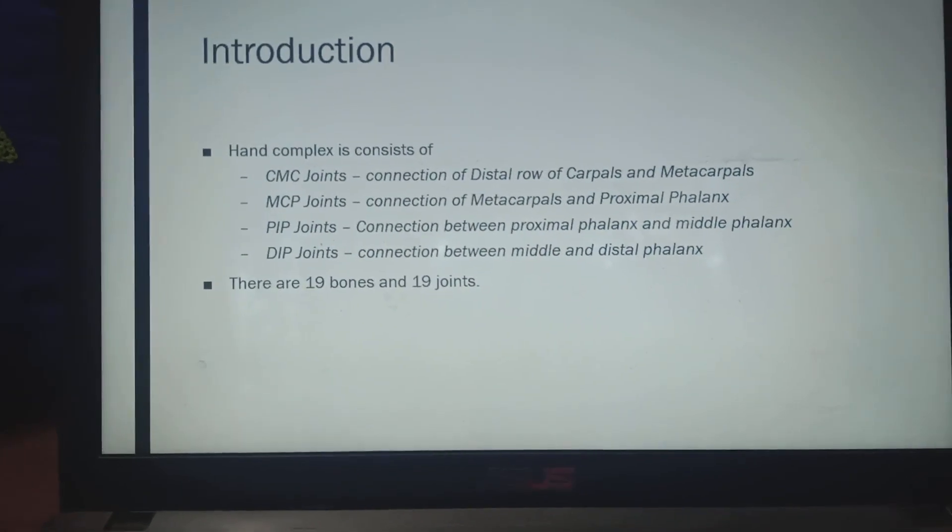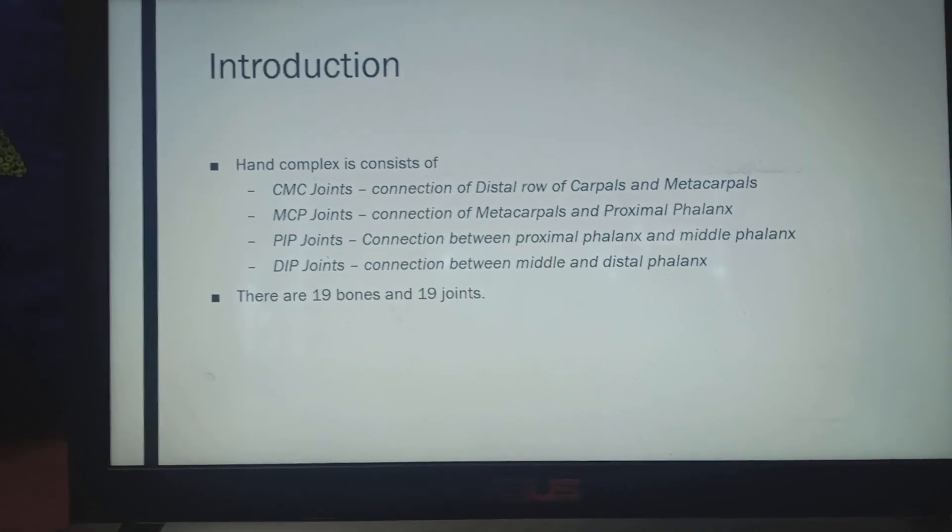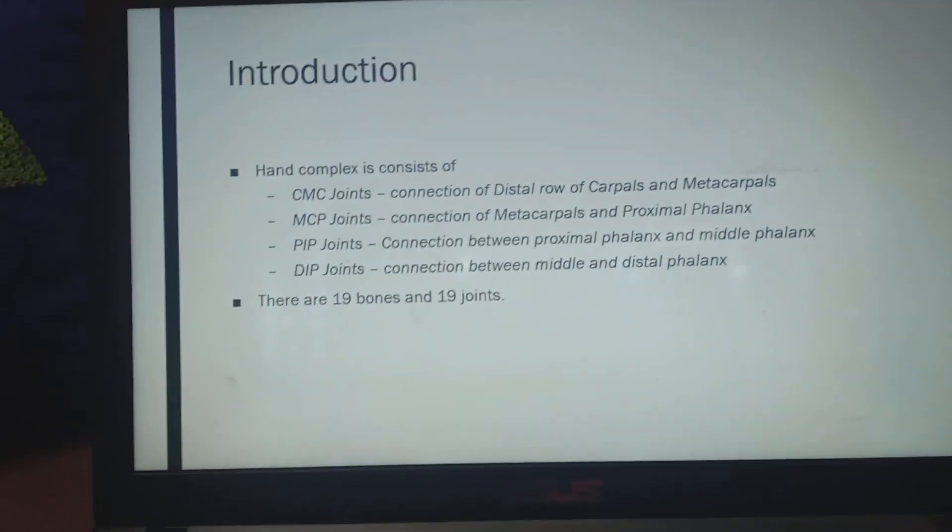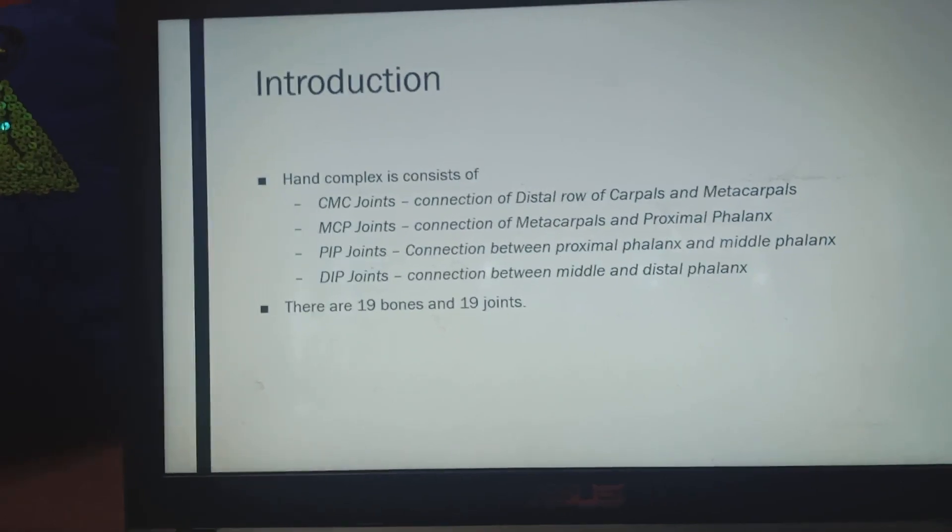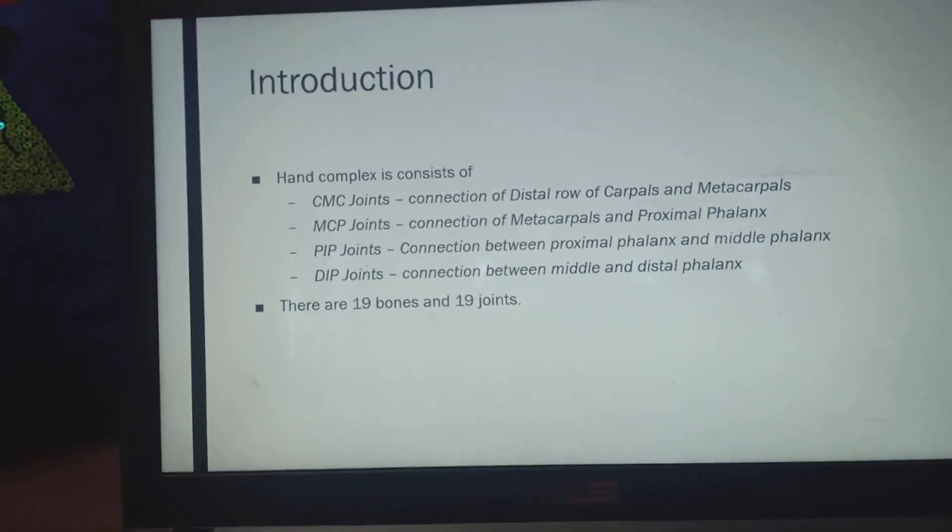PIP joints and DIP joints. We all know CMC is carpometacarpal joints, which is connected by distal row of carpals and metacarpals. Distal row of carpal means trapezium, trapezoid, capitate and hamate from lateral to medial aspect.